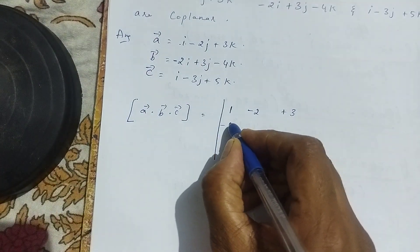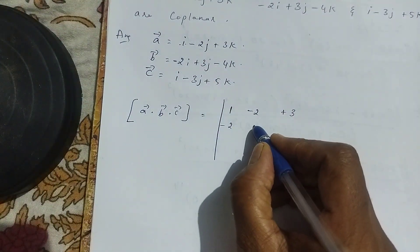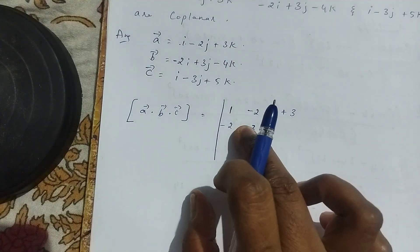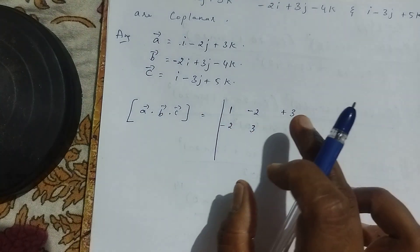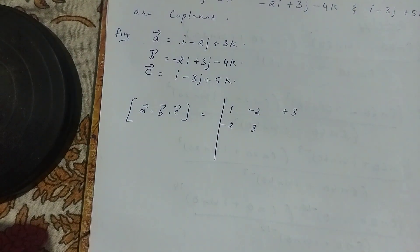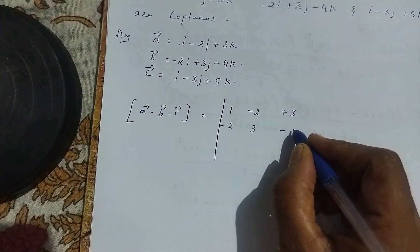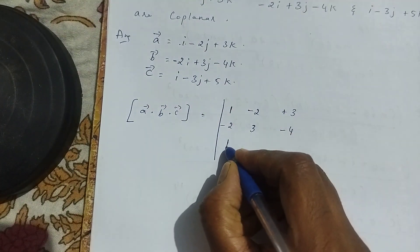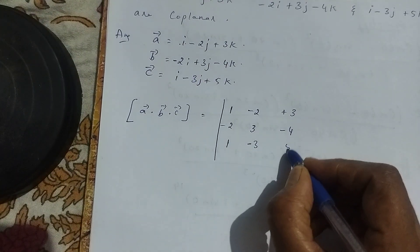For vector b: coefficient of i is minus 2, coefficient of j is 3, coefficient of k is minus 4. Note that if there is a plus sign, we don't need to write it explicitly — a number without a sign is taken as positive. For vector c: coefficient of i is 1, coefficient of j is minus 3, coefficient of k is 5.